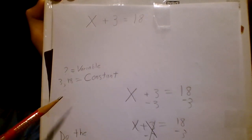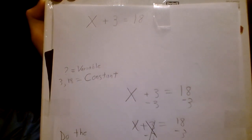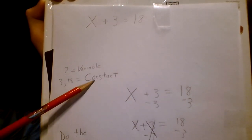Secondly, the 3 and 18 in this equation, no matter what other numbers they are in a different equation, they will always be called the constant.